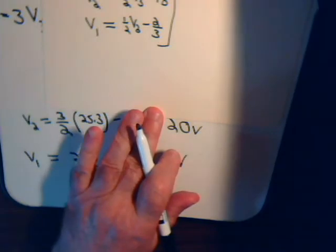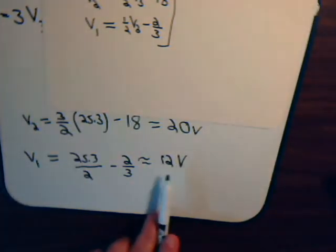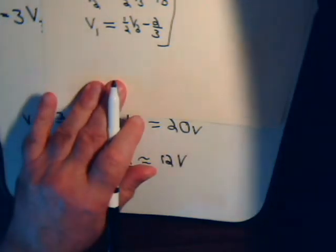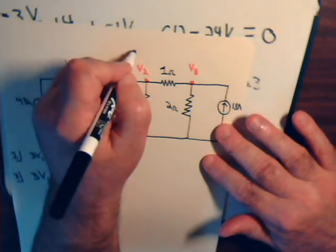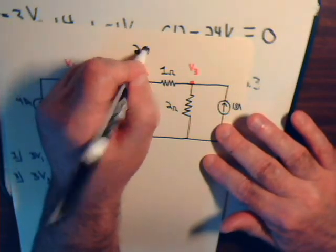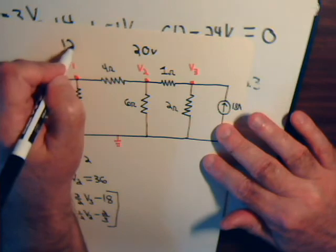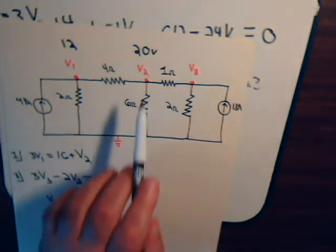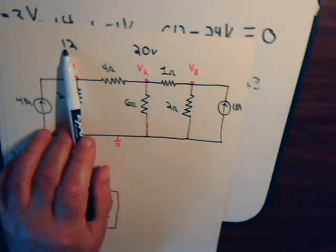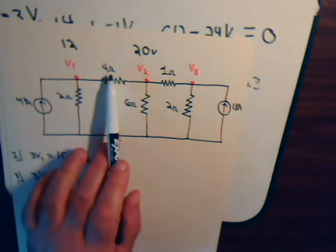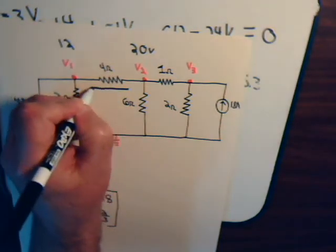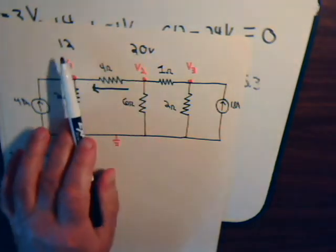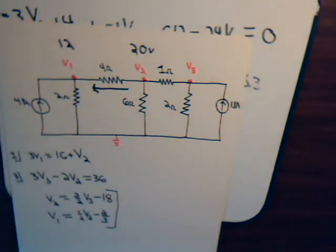Now, we have V2 is at 20 volts, V1 very close to 12 volts. So let's go to here. This is 20. This is 12. So the current is going to be 20 minus 12. That's 8 divided by 4 is 2 amps of current. And it's going to go in this direction.